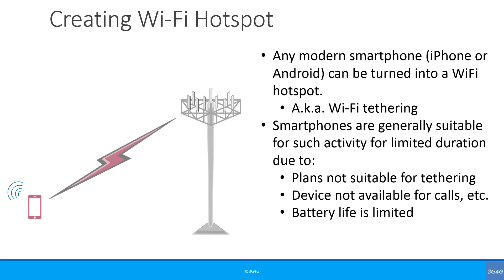The battery of the smartphone doing tethering dies rather quickly. There is also a limited charge-discharge lifetime of a battery, so using it for tethering can kill the battery quickly. Finally, the hotspot coverage area created by a smartphone is quite limited — it is around 10 to 20 feet radius at most.